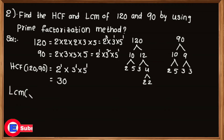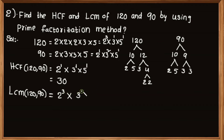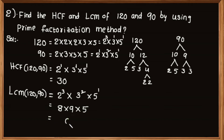The product of greatest powers of each prime factor is known as LCM. 2, 3 and 5 are the prime factors and their greatest powers are 2 cubed, 3 squared and 5 to the power 1. So LCM of 120 and 90 is equal to 2 cubed multiplied by 3 squared multiplied by 5 to the power 1. After simplification we get 360. So LCM of 120 and 90 is equal to 360.